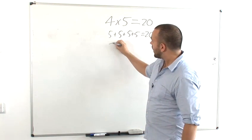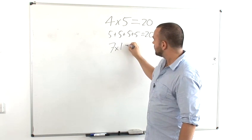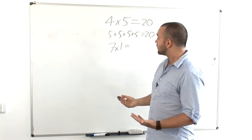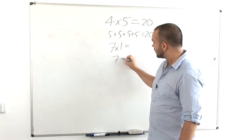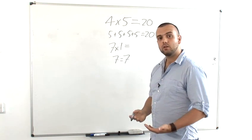Then you can ask things like, what happens if you multiply a number by one? Well, if you multiply a number by one, that means one lot of seven. So if you multiply a number by one, it stays the same.